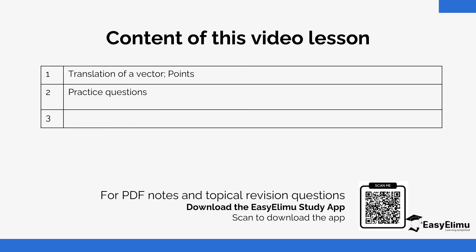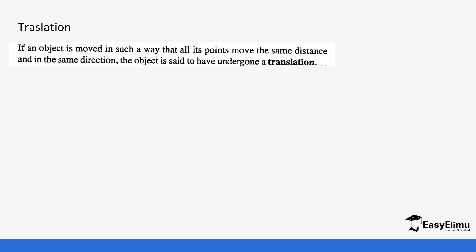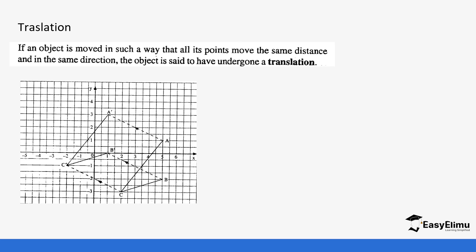We will find out what a translation vector is and how exactly we use it to get to the image we want. Translation: when an object is moved such that all the points move in the same direction and the same distance, we say there is a translation. We've talked about translation before in our previous topic — you can go back and check form two. You can see that point A moves to A prime, C and B also move in the same direction and same distance.